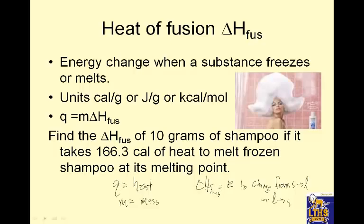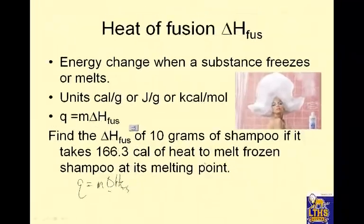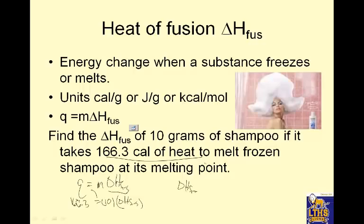Find the delta H fuzz of 10 grams of shampoo if it takes 166.3 calories of heat to melt frozen shampoo at its melting point. Isn't that fun to think of frozen shampoo? I think it is. So let's check it out. Q equals M delta H fuzz. So I'm looking for delta H fuzz. 10 grams of shampoo, that's my mass. And Q, this is heat, right, is 166.3. So then solve for delta H fuzz by doing 166.3 divided by 10. I guess I don't need a calculator for that. That would be 16.63 calories per gram. So notice this says calories and this says grams, so that's why it's calories per gram.